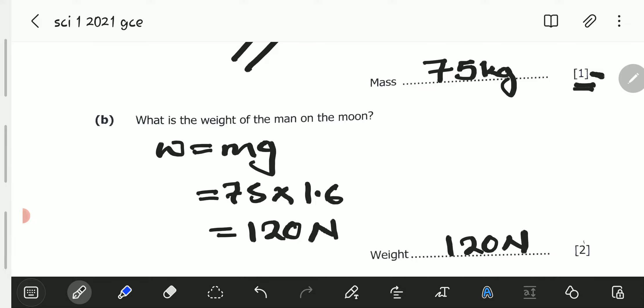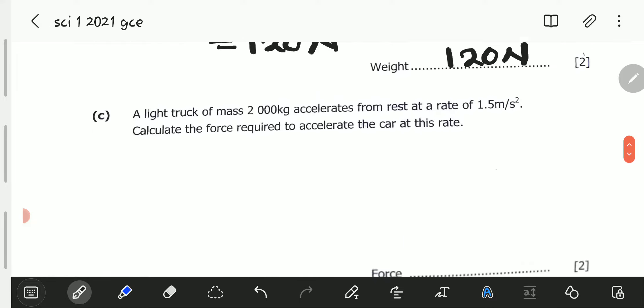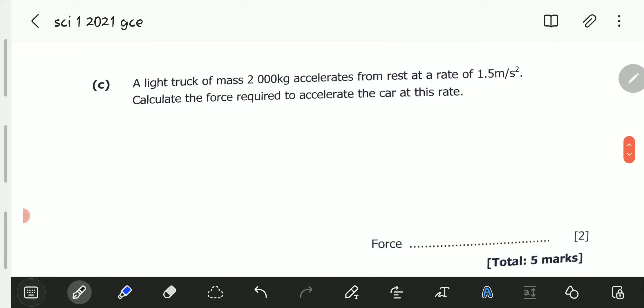So, that is the weight of the object. For showing your working there, it's usually a mark. And the final answer is usually another mark. So, always remember to show your working. So, let's say 120 Newtons.